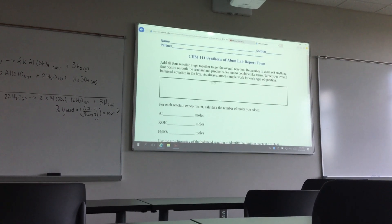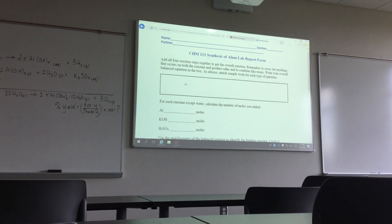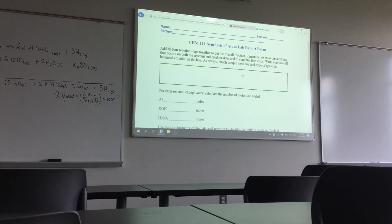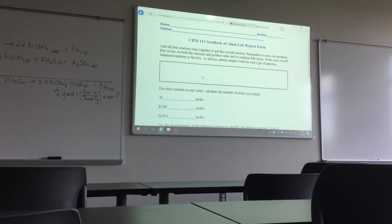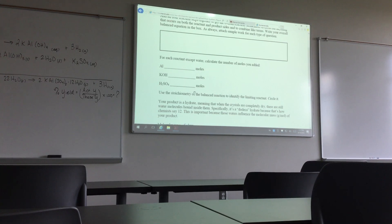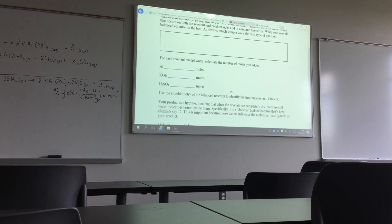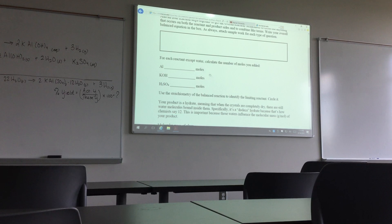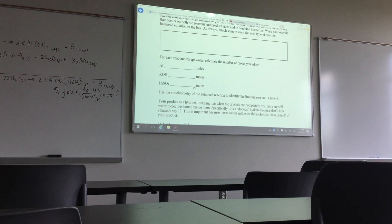In this area right here, you will write the overall balanced equation, which I'm going to go over in just a moment. You'll attach the work for this on a separate sheet. Here, I want you to X this section out because you're going to find the limiting reactant. X out this find the number of moles you added section.